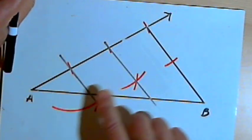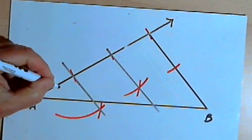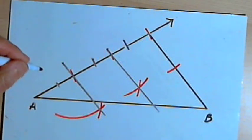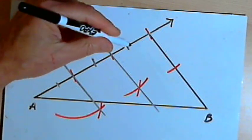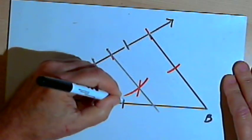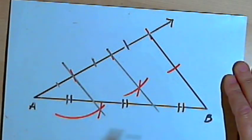So now what I've got is three parallel lines. They cut through the ray, which is one of my transversals, and form congruent line segments. So that means they form congruent line segments dividing line segment AB into three sections.